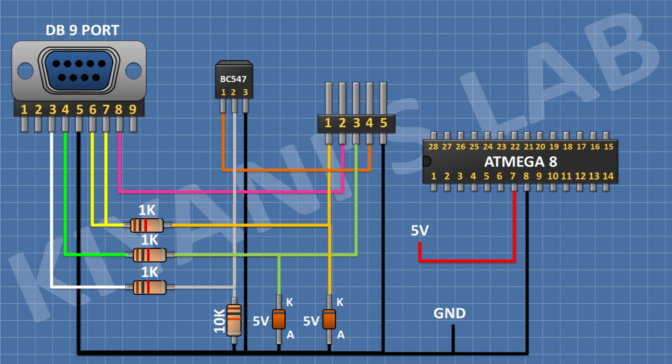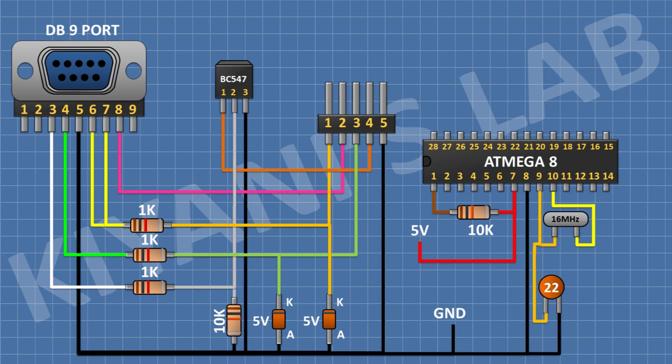First, connect a 10K resistor to pin 1 and pin 7 of the microcontroller. Now connect a 16 MHz crystal to pins 9 and 10 of the microcontroller. Then connect a 22 pF non-polar capacitor with one pin to pin 9 of the microcontroller and its other pin to ground. Connect another 22 pF non-polar capacitor with one pin to pin 10 of the microcontroller and its other pin to ground.